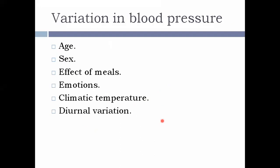Now let's see the variations in blood pressure. The first is age, which plays a major role. Blood pressure varies at different ages — in an infant, at birth, and in adolescence. At birth, the systolic blood pressure is around 40 mmHg, with a range of 20 to 60 mmHg.